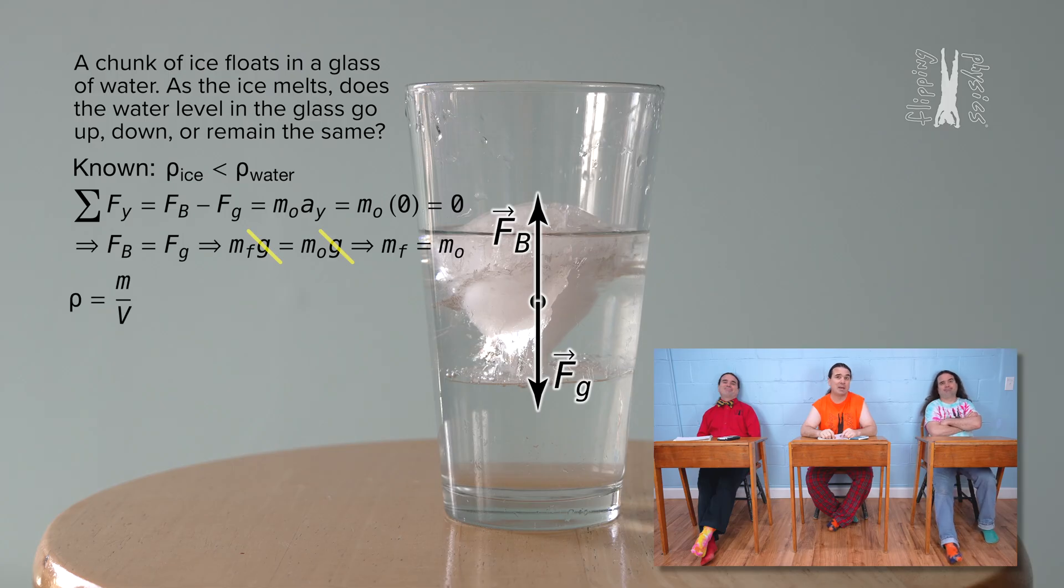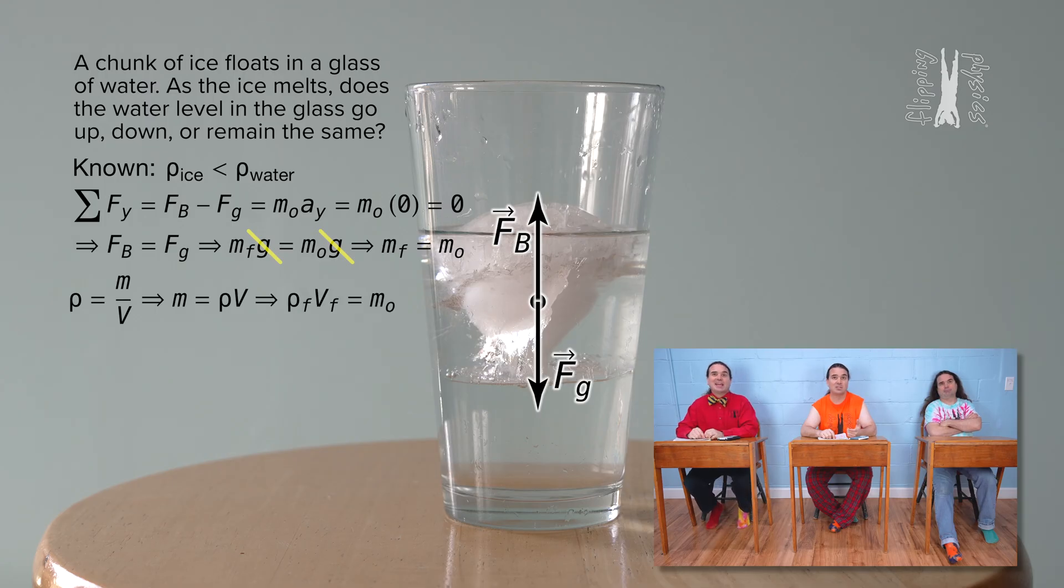That means the mass of the fluid displaced by the ice chunk equals the mass of the ice chunk. And we know density equals mass over volume, so mass equals density times volume. We can substitute that into our equation to get the density of the fluid displaced by the ice chunk times the volume of the fluid displaced by the ice chunk equals the mass of the ice chunk.